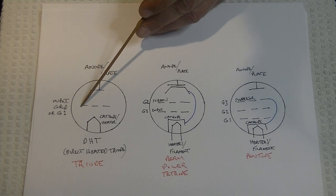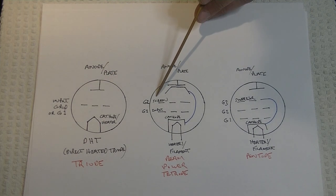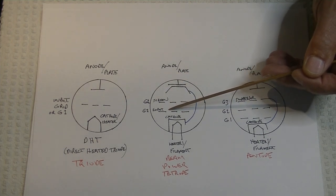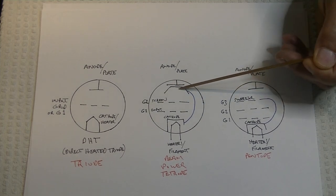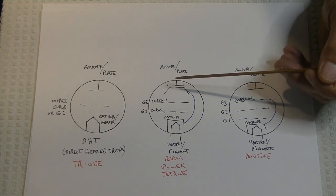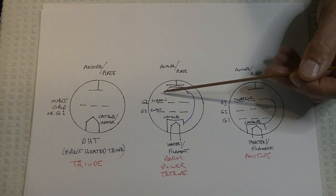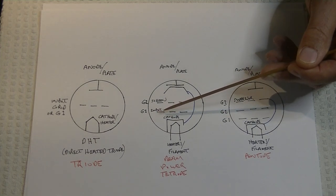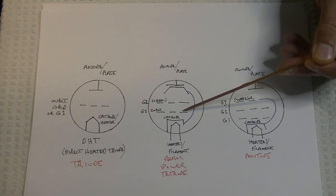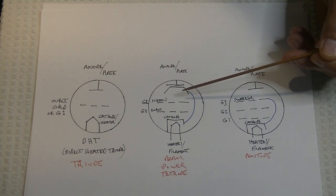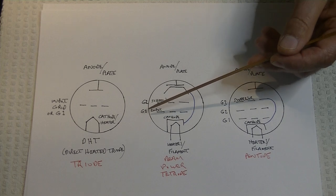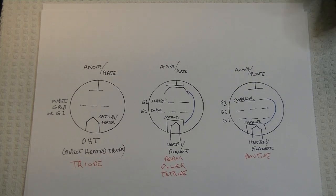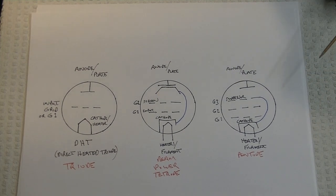G1, or the input grid, is the same as our DHT. But we've added something called G2, the screen grid. All that does is help keep stray electrons that get bounced off the plate or are wandering around aimlessly from going back onto G1, the input grid, because we don't want any excess electrons other than the audio signal getting onto here and messing things up. The reason for that is we mostly control the operating point of a tube from the input grid.